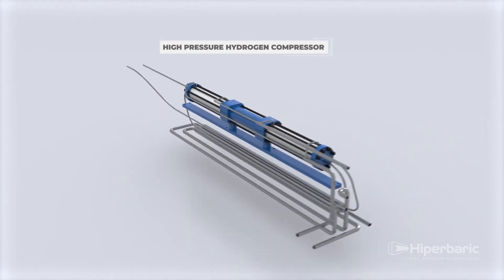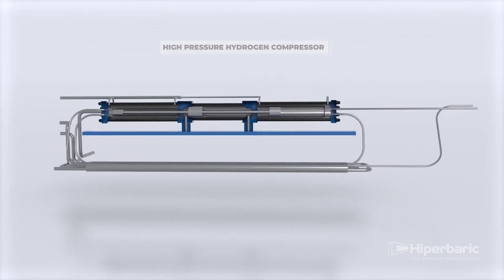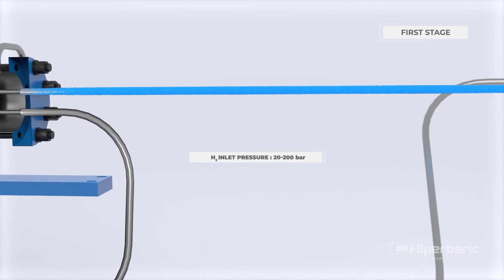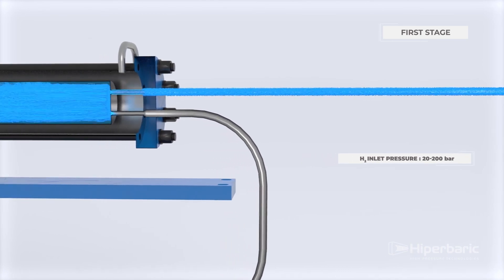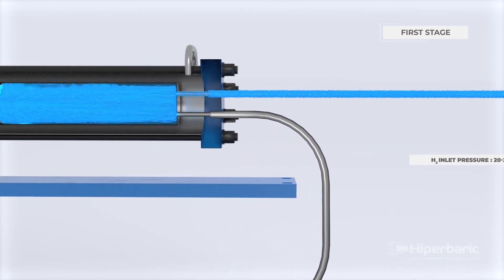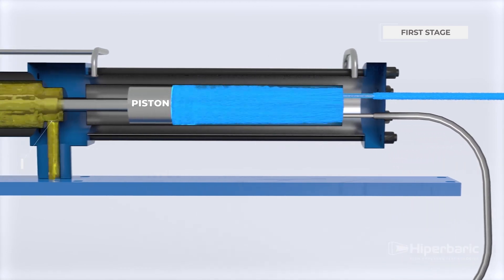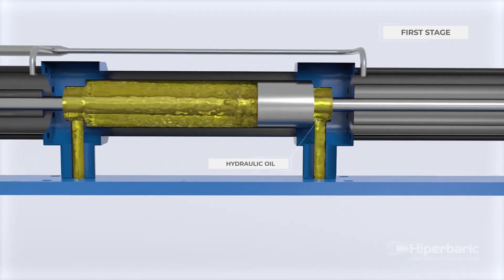The technology works in two stages. In the first stage, the hydrogen enters the compression chamber at the inlet pressure between 20 and 200 bar. The gas enters at the same time as the piston makes a return movement. Hydraulic pressure pushes the hydraulic rod, which in turn pushes the piston, ultimately compressing the hydrogen.